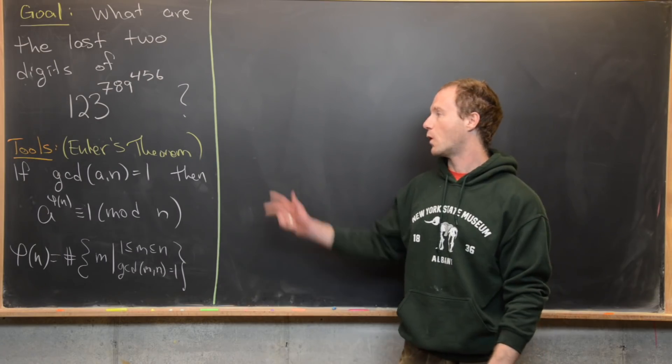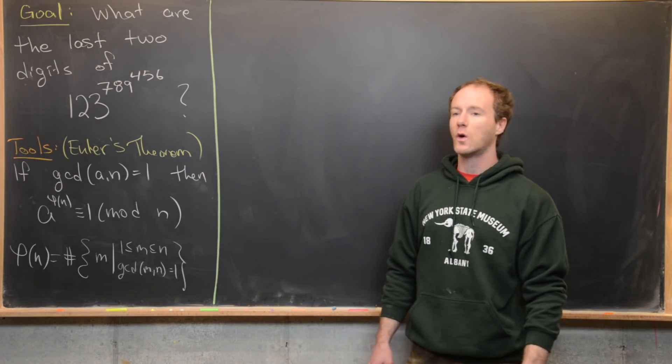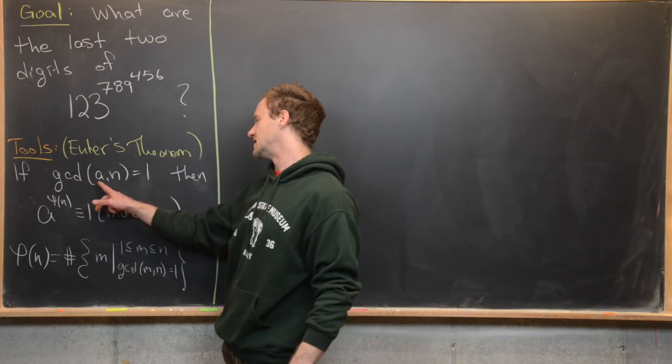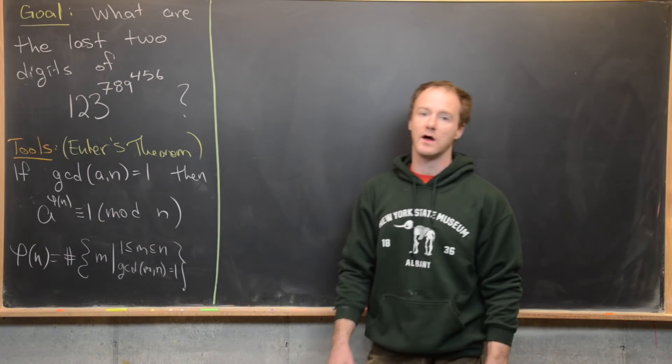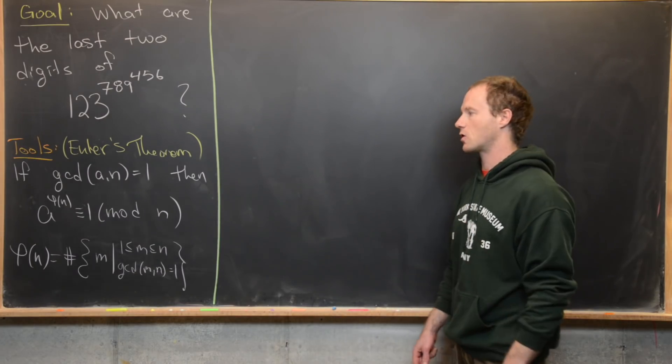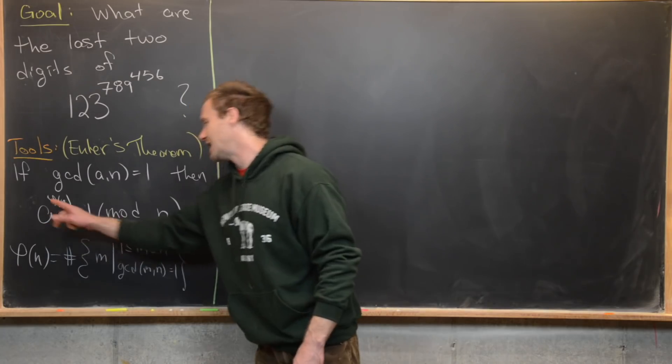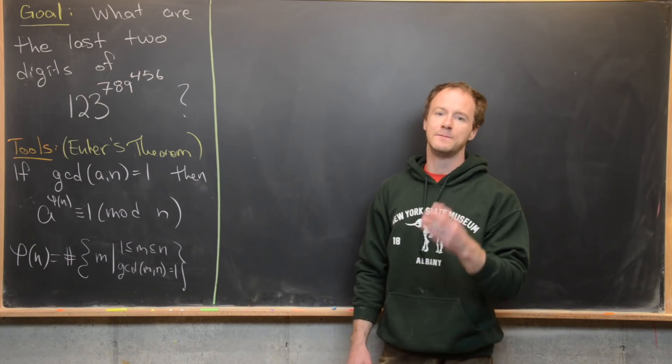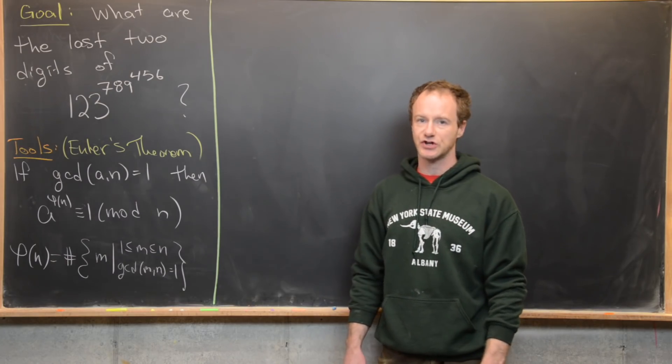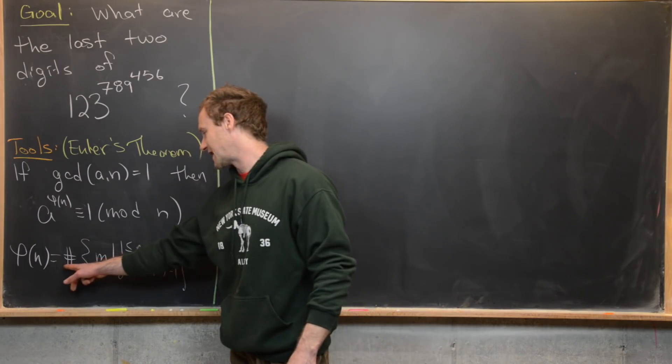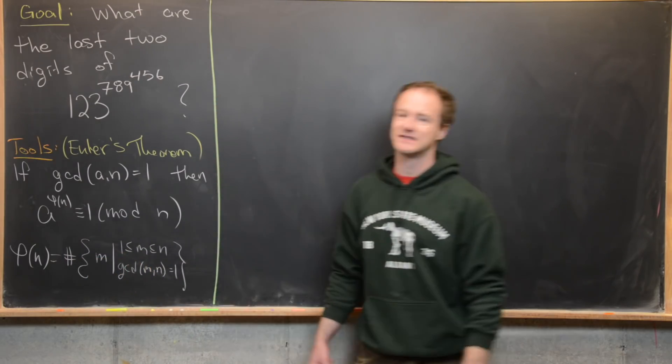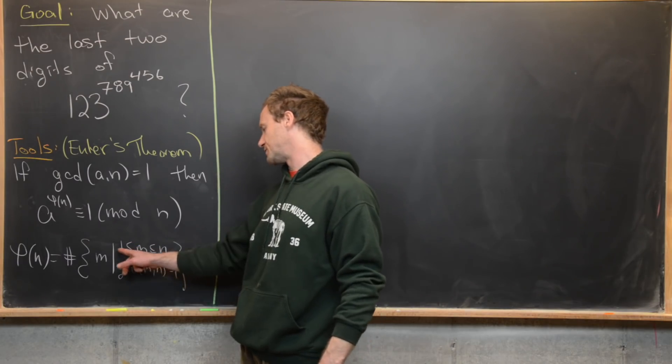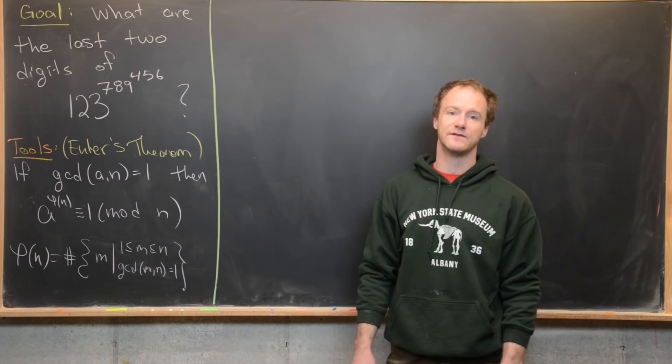We've got 123 to the power of 789 to the power of 456. Our main tool will be Euler's theorem, or sometimes called Euler's generalization of Fermat's little theorem. It says that if the GCD of a and n is 1, in other words a and n are relatively prime, then a to the phi of n is congruent to 1 mod n. This phi of n is called Euler's totient function, and what it does is it counts the number of elements in this set. This set is built of all of the numbers between 1 and n that are relatively prime to n.